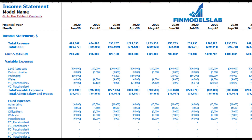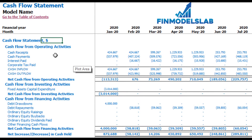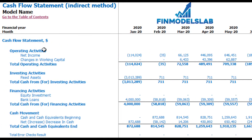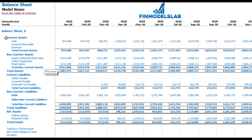On the cash flow statement you may see your cash flow broken down by operating activities, investing activities, and financing activities. The same information is available on the direct method cash flow statement in a more collapsed form. The balance sheet will show you the breakdown of current assets, non-current assets, current liabilities, non-current liabilities, and equity by their subcategories.